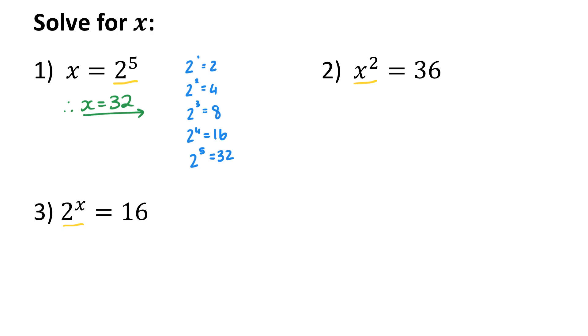In my next example x is the base of my power and I want to know which number squared gives me 36. One way to solve this is by factorizing. So I'll bring everything to the left. Difference of 2 squares. And then I have two solutions: x is negative 6 or x is 6.